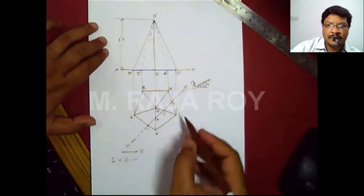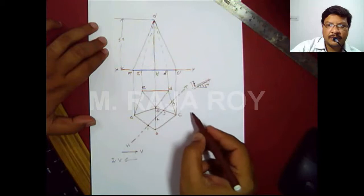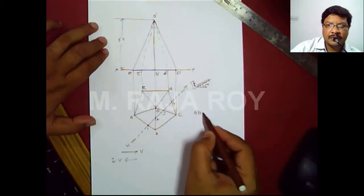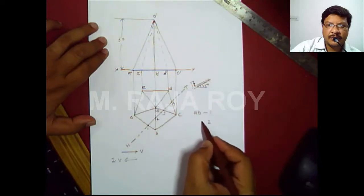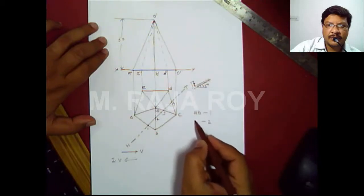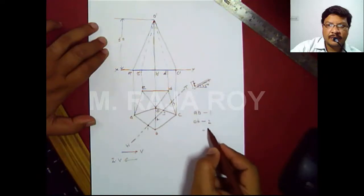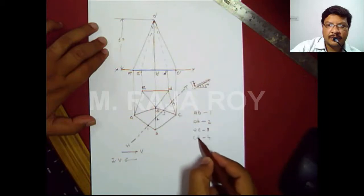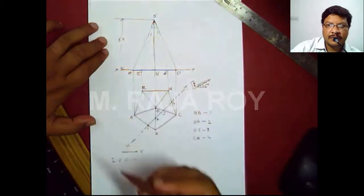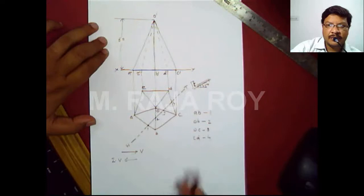Now mark the point details: point 1 is on edge AB, point 2 is on OB, point 3 is on OC, and point 4 is on CD. Now when transmitting these points to the front view, all four points must be obtained.